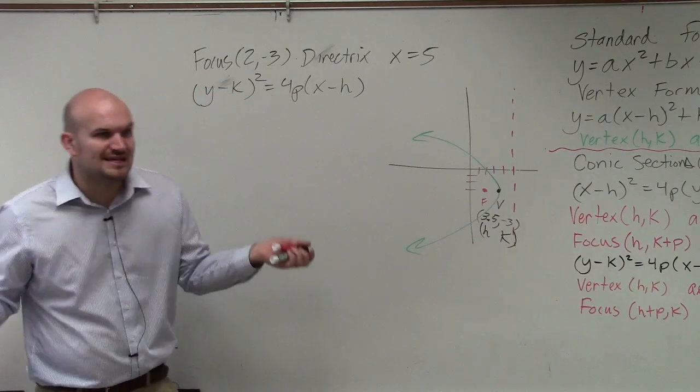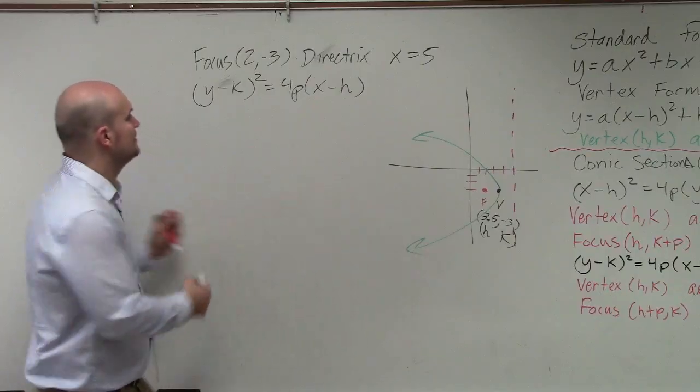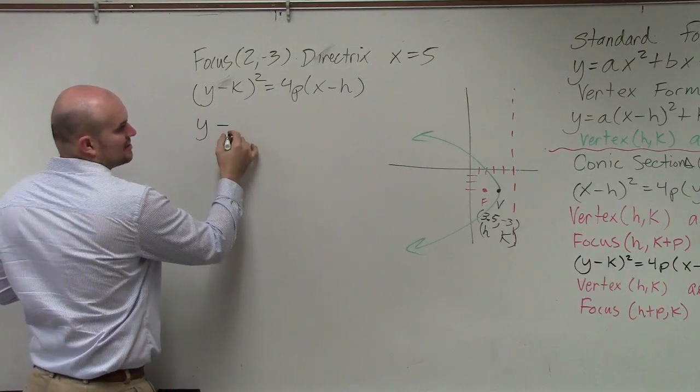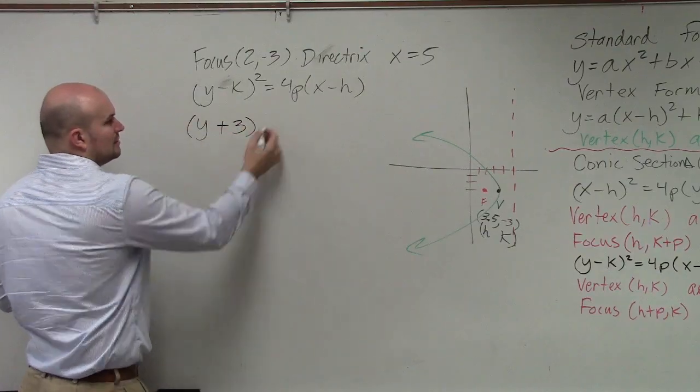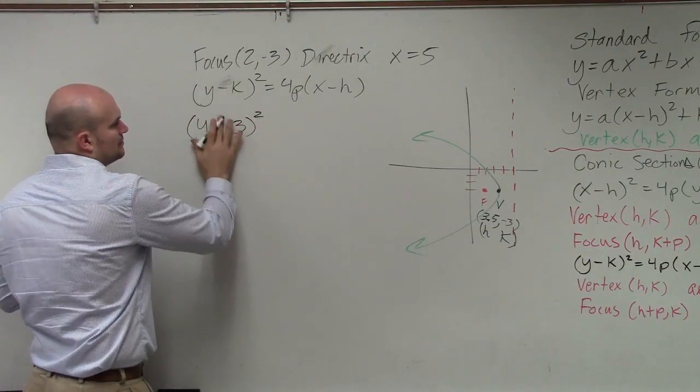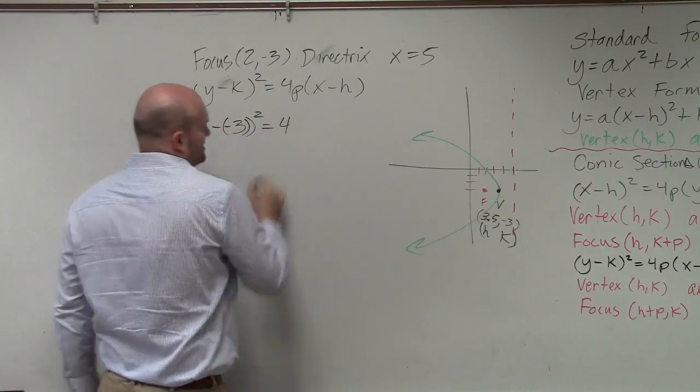The last problem, the vertex was at 0, 0, correct? So now, we have a vertex at h and k. So y is going to be y minus, or y plus 3 minus a negative 3, equals 4 times p.